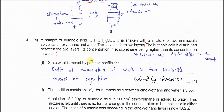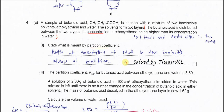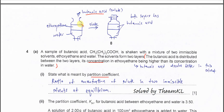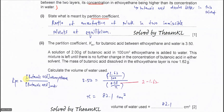Part one: state what is meant by partition coefficient, KPC. KPC depends on the concentration of the solute in a two-solvent system. The KPC for this system is the concentration of butanoic acid in ethoxyethylene divided by the concentration of butanoic acid in water. When we get the two concentrations, we can calculate the KPC.